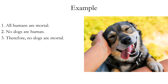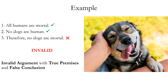Another example: All humans are mortal — true. No dogs are human — also true. Therefore, no dogs are mortal — false. We have an argument with true premises and a false conclusion. If the premises were true, would they prove the conclusion? The answer is no — it's an invalid argument form. Just because all humans are mortal and no dogs are human, it does not prove that no dogs are mortal. This illustrates the concept of being invalid very clearly. If an argument has true premises and a false conclusion, that's how you know it's not valid. If you discover one example of an argument form that has true premises and a false conclusion, you can prove that all other arguments sharing that form are invalid.